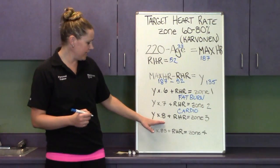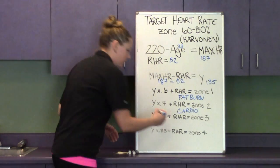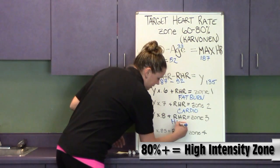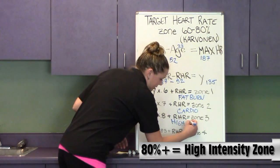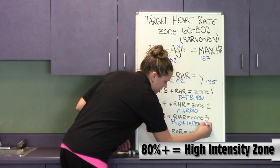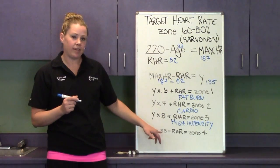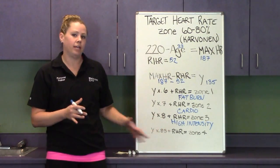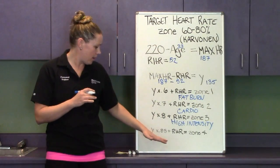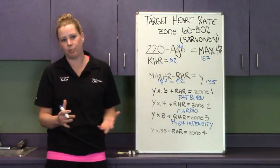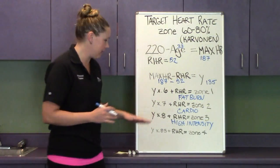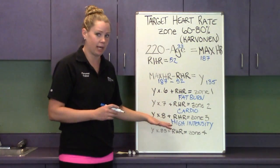And 80 percent and up is going to be your high intensity. You don't really have a need to go above 85 percent of your heart rate unless you're a high intense athlete, maybe doing a sprinting event or something like that. So these are the zones that we're going to concentrate on.